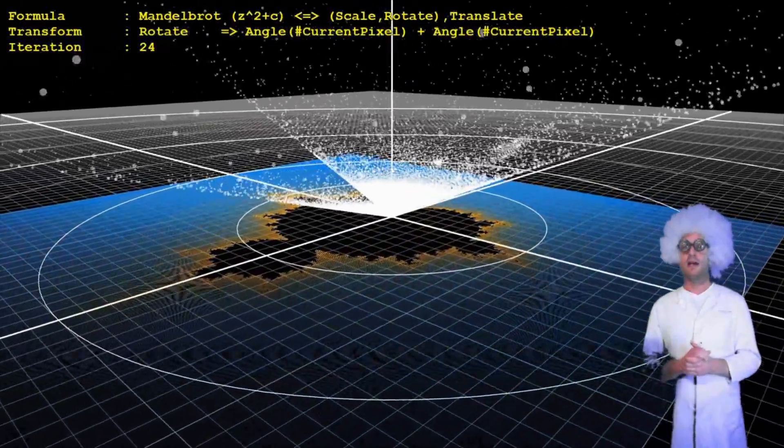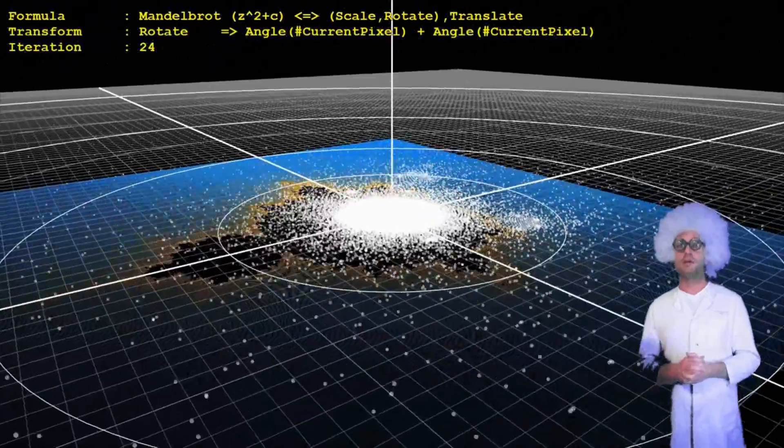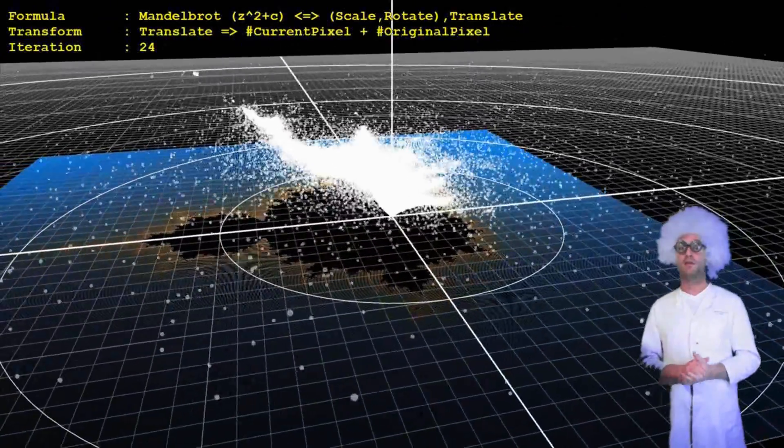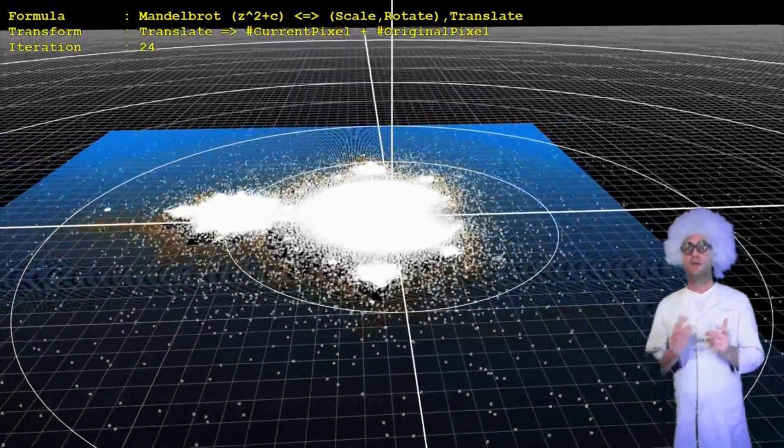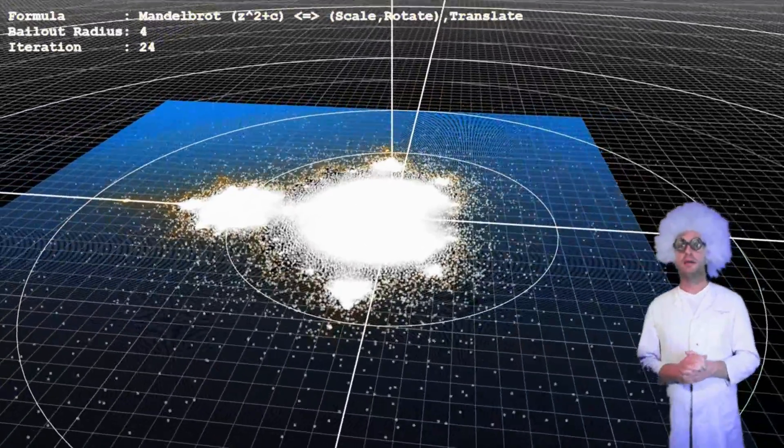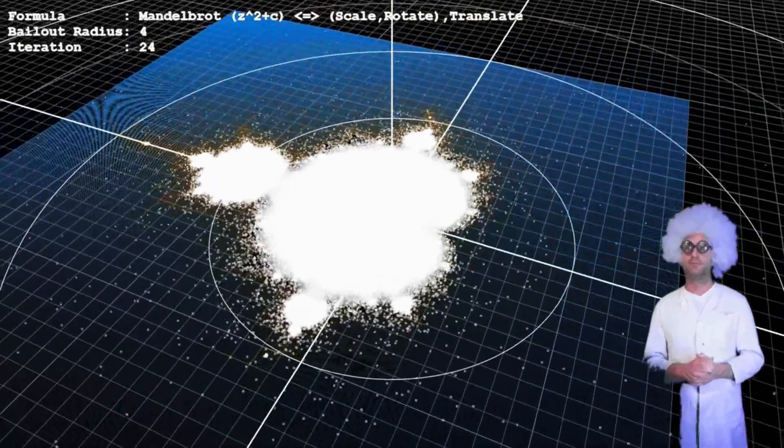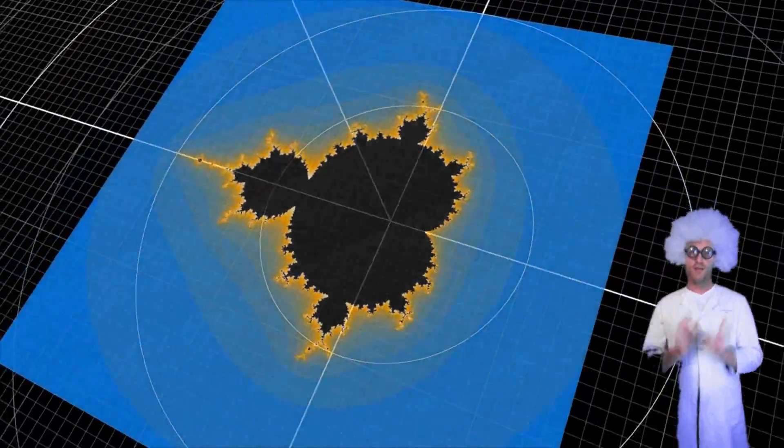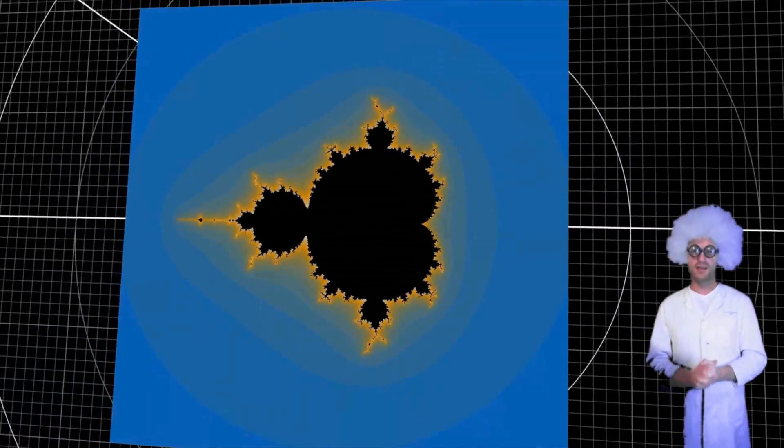This is the last iteration. All points that did not bail out until now are considered belonging to the Mandelbrot set. Here we move them to their starting locations and color them black. And this is the resulting image. Thank you for watching and see you next time.